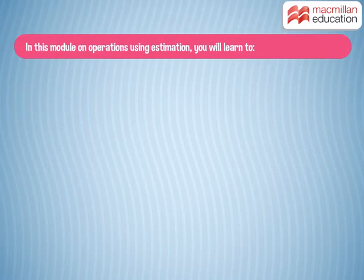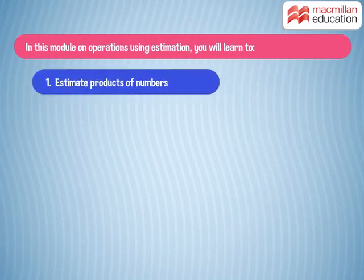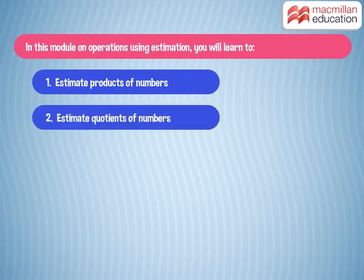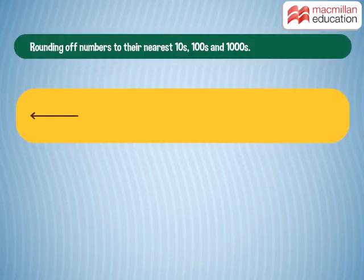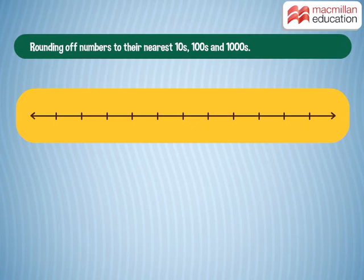In this module on operations using estimation, you will learn to estimate products of numbers and estimate quotients of numbers. We have learnt how to round off numbers to their nearest tens, hundreds or thousands, haven't we? Let's check how good we are at this.